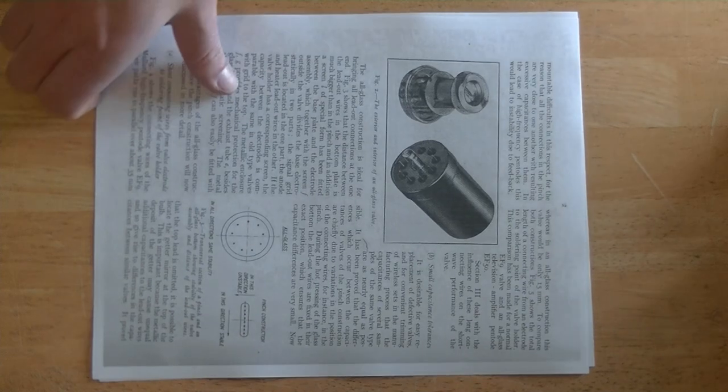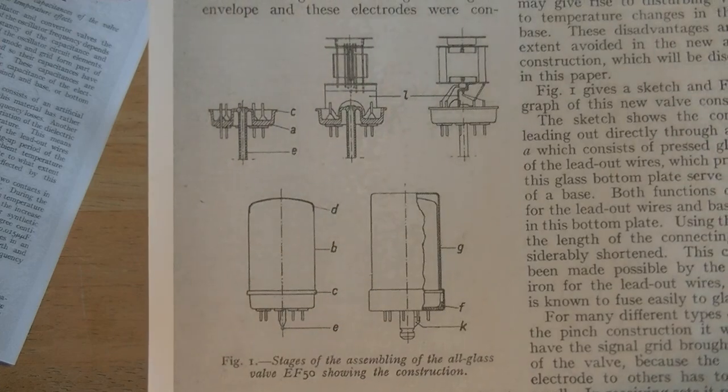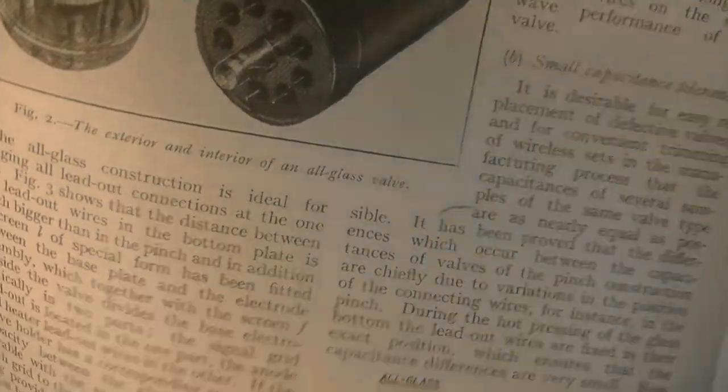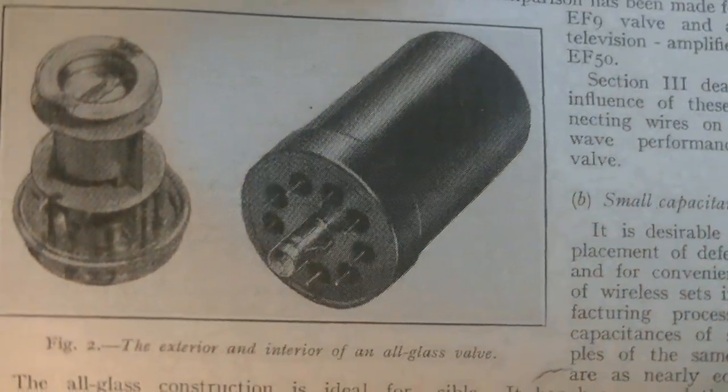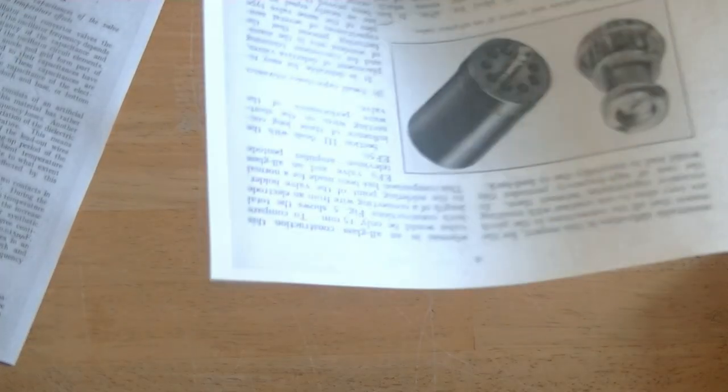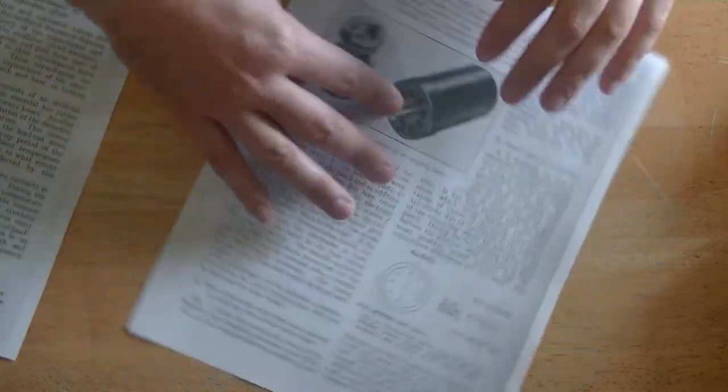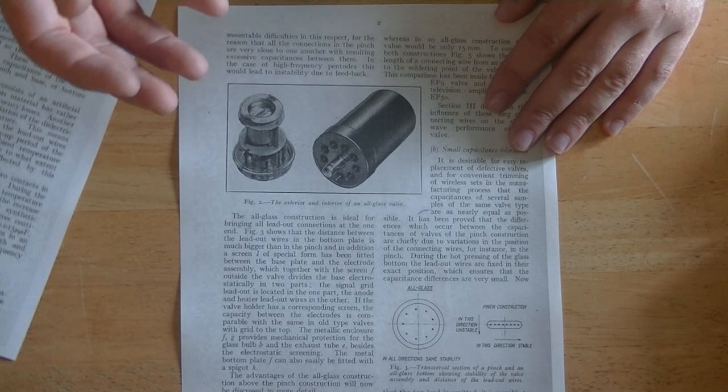I have some other print-offs here from an internal article that somebody was nice enough to translate online. This is from Phillips, and it shows some of the internal construction characteristics. Let me see if I can get these in focus here, of the EF50. And, interestingly, here is a picture of an EF50 without a central locking divot on the central pin. And, if you'd like to read this article, it explains why that exists. The original idea was that they would have sockets that had locking mechanisms in them, and sockets that didn't have locking mechanisms in them.